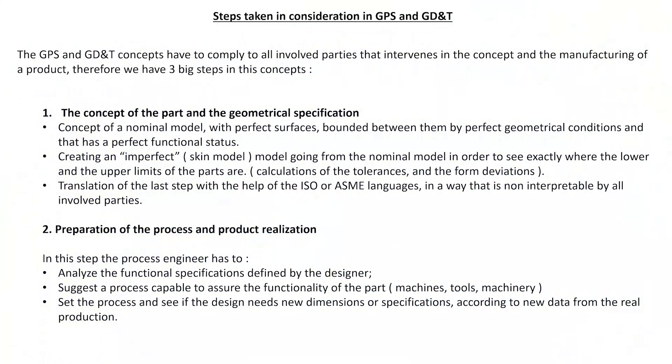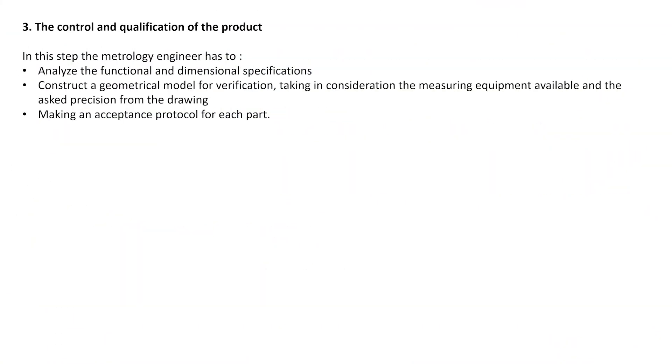Okay, so we have also the last step, the control and the qualifications of the product. In this step the metrology engineer has to analyze the functional and dimensional specifications, construct a geometrical model for verification, usually this is the measuring program of the part, taking in consideration the measurement equipment available and ask precision from the drawing. So according to the drawing we can see for example what tolerances do we have, what equipment do we need to use to measure the part. And make an acceptance protocol for each part.